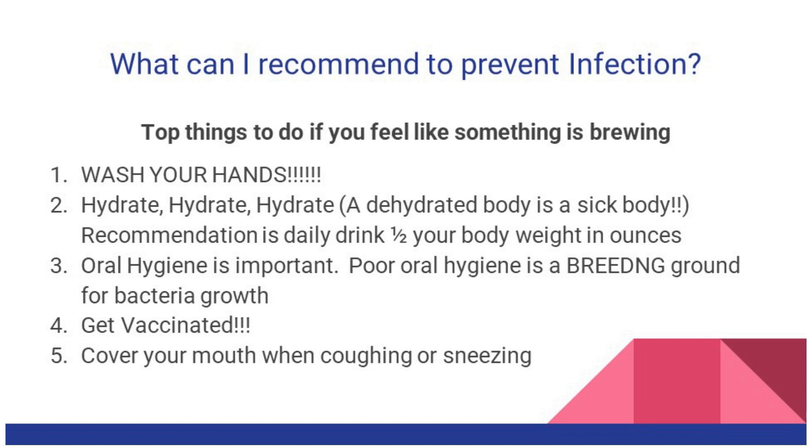What can I recommend to prevent infection? Wash your hands — wash your hands — wash your hands. Hydrate, hydrate, hydrate. The recommended amount of water is one half your body weight in ounces. For example, if you weigh 200 pounds, you should drink about 100 ounces of water a day. This is a 16-ounce bottle — 16 times 6 is about 96, so roughly six of these a day. I've been trying to do that, and I've noticed I need to start first thing in the morning with two bottles of water, otherwise I simply don't make it to six bottles a day.